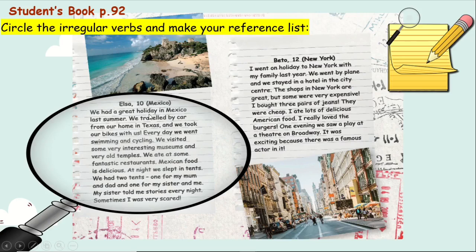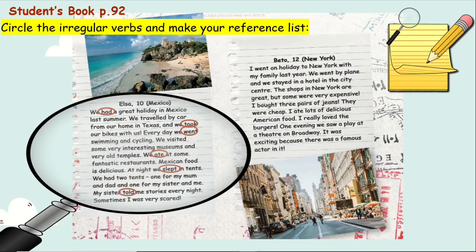'We had a great holiday in Mexico.' Had — what's the present form of 'had'? Have. So: had / have. We took our bikes — took / take. We went swimming and cycling — went / go. Ate / eat. We slept in tents — slept / sleep. My sister told me stories every night — told / tell. Good job!